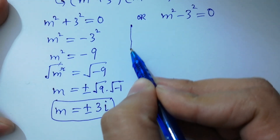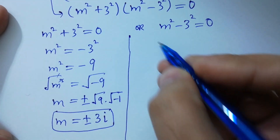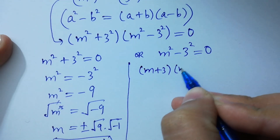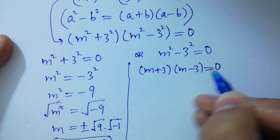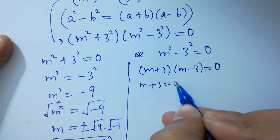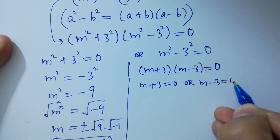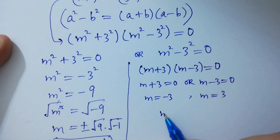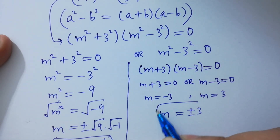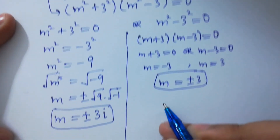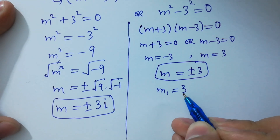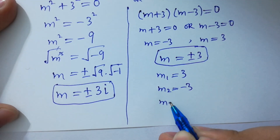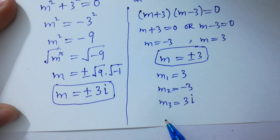For m squared minus 3 squared equals 0, apply the formula a squared minus b squared equals (m plus 3)(m minus 3) equals 0. Either m plus 3 equals 0 or m minus 3 equals 0, giving m equals plus or minus 3. These are our real solutions.